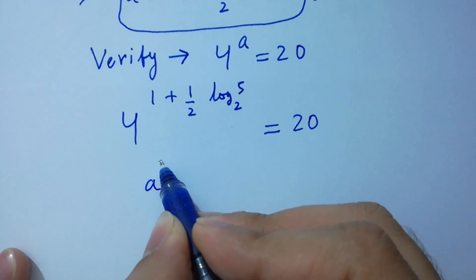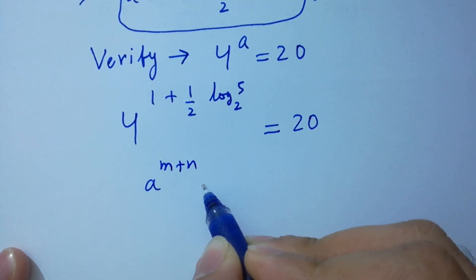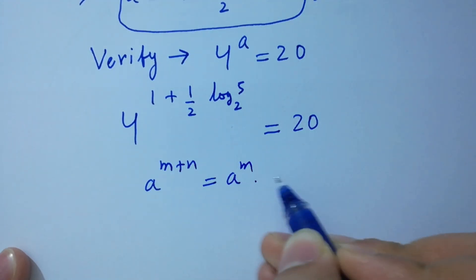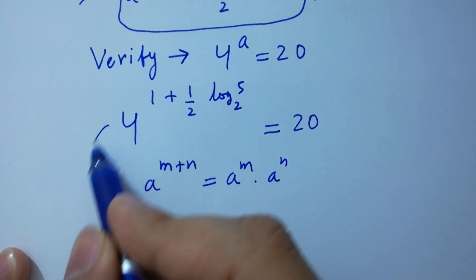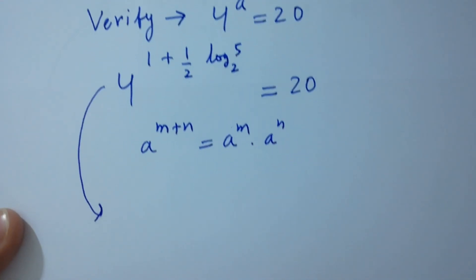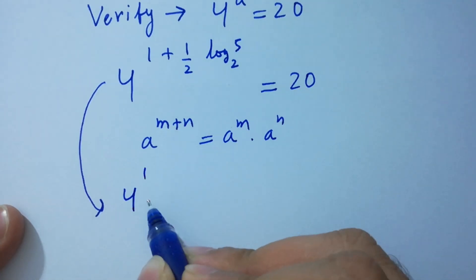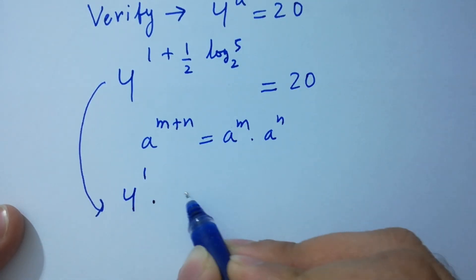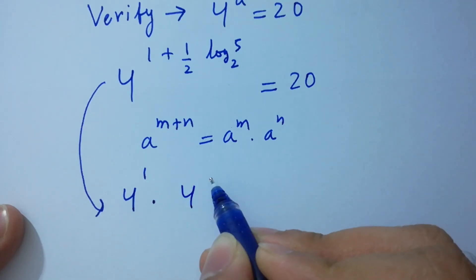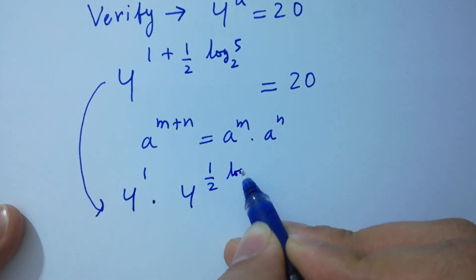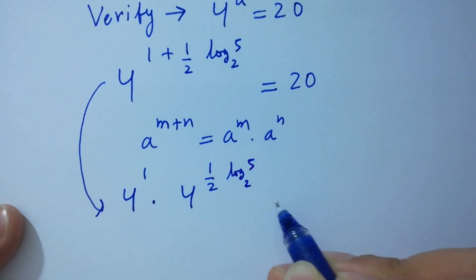A to the power M plus N equals A to the power M times A to the power N. We get 4 to the power 1 times 4 to the power 1 over 2 log 5 to the base 2 equals 20.